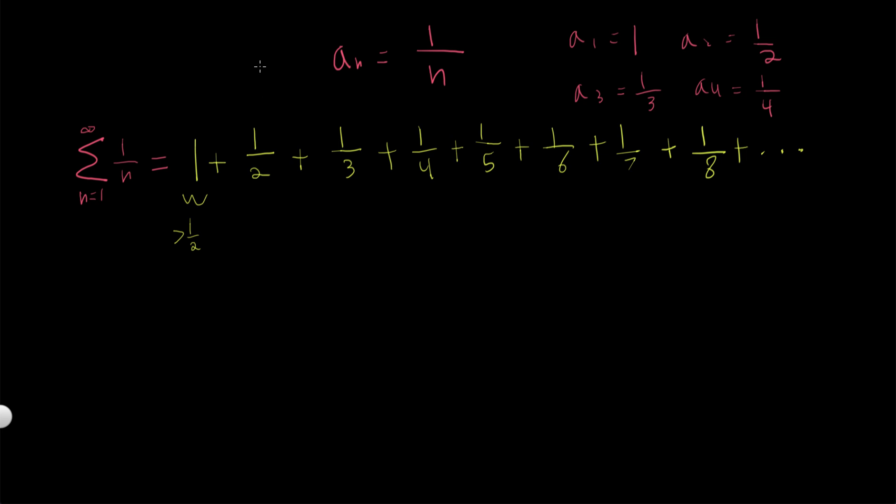1 half plus 1 third. Well, we can do this right here. We have 1 half plus 1 third. We can get a common denominator. This comes out, the common denominator is 6, right? So this is 3 plus 2 over 6, which is equal to 5 over 6. So these two numbers added together is greater than 1 half. And you'll see where I'm getting with this in a little bit.